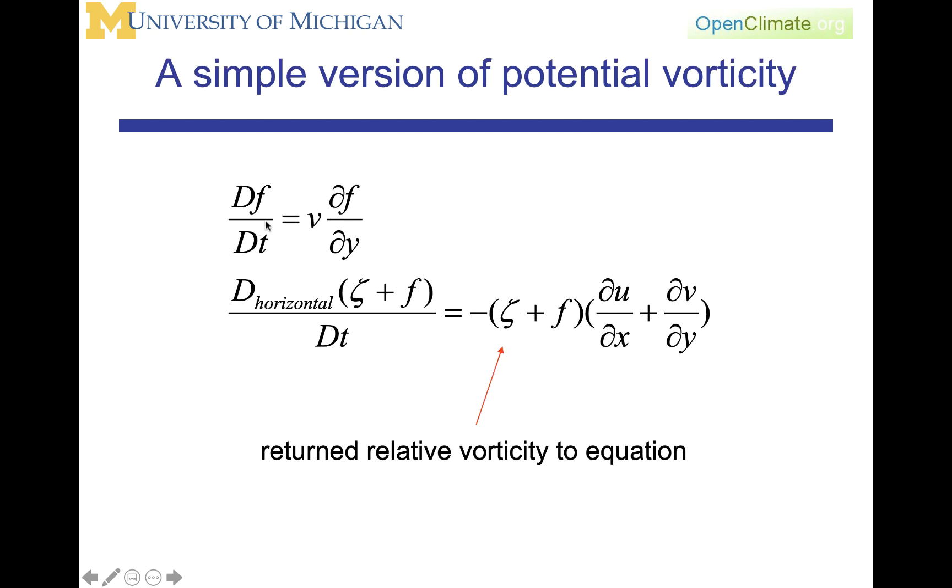We're going to return now to the vorticity equation. We will remember that df/dt, where this is the material derivative of f, the planetary vorticity, is equal to v df/dy. Hence, we are keeping the variability of f with latitude explicitly in the equations. And df/dy, again, is the variable beta.